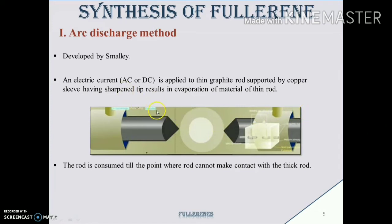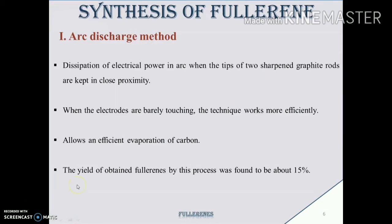The deposition of the soot of carbon takes place on the cathode. This process gives a yield of 15 to 20%. The technique works more efficiently when the electrodes are barely touching each other.